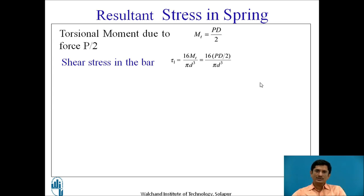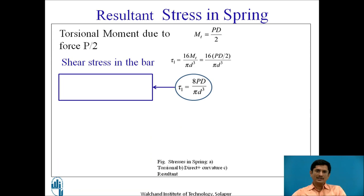We can simplify the equation and ultimately we can get tau 1 equals 8 PD upon pi d cube. Let us see in the figure how tau 1 can be represented. This is the cross section of the spring, axis of the spring. And on this end, we can see that how the shear stress is distributed. This is a component of torsional shear stress.